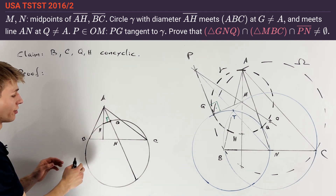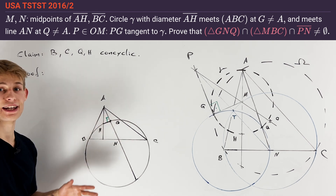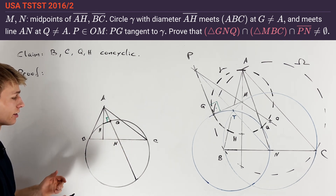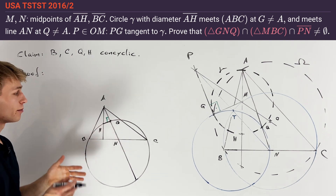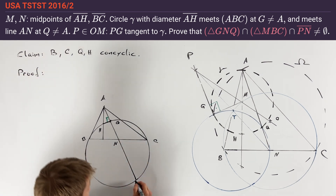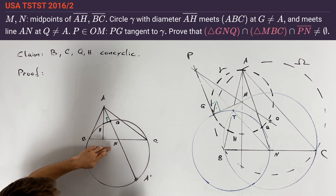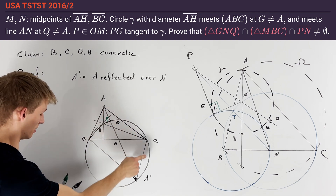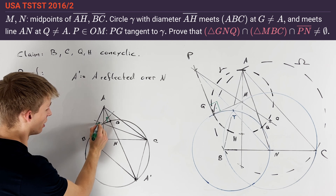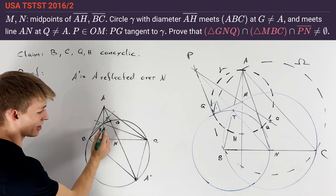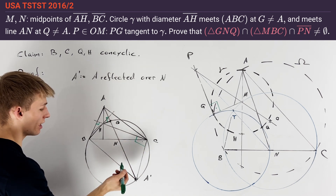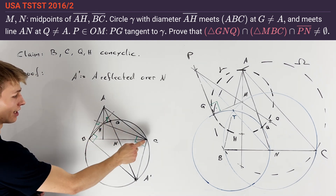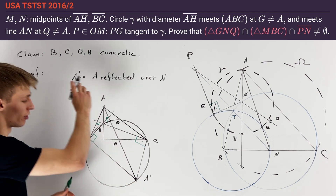We want to prove that Q lies on the circumcircle of triangle BHC. A well-known property is that this circumcircle is the circumcircle of triangle ABC reflected over line BC. To prove this, we introduce the point A', the reflection of A over N. This implies A'C is parallel to BA, and A'B is parallel to AC. Using the fact that CH is perpendicular to AB, we get CH is also perpendicular to CA'. Similarly, angle A'BH equals 90 degrees. Therefore B, Q, and C all lie on the circle with diameter HA', and our claim is proven.